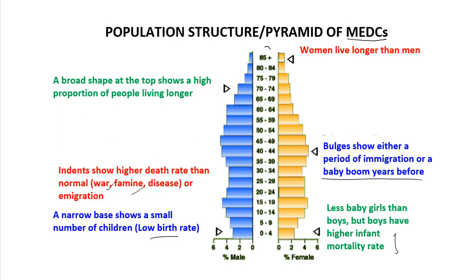MEDCs have higher life expectancy — the pyramid extends to 85 plus. Women live longer than men, as the female bar is wider than the male bar at the top. A broad shape at the top shows a high proportion of people living longer. This is the key difference between the population pyramids of LEDCs and MEDCs.